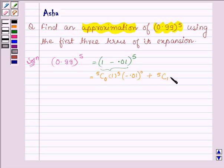plus 5C1 times 1 raised to the power 4 times minus 0.01 raised to the power 1, plus 5C2 times 1 raised to the power 3 times minus 0.01 raised to the power 2, plus so on.